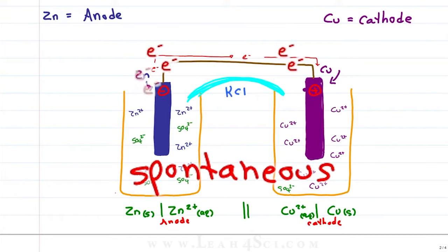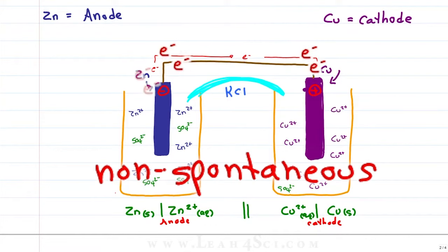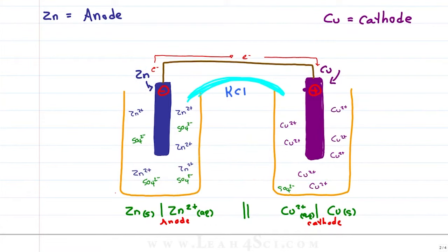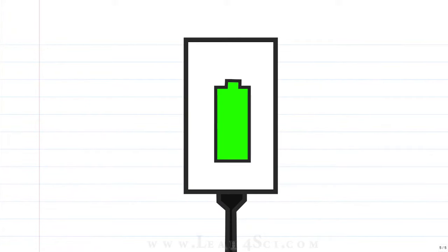If discharging is spontaneous, then charging or forcing the electrons in the opposite direction, the direction they don't want to go, is a non-spontaneous reaction. How do we make the non-spontaneous reaction happen? This is going to require an input of energy like a cell phone charger to force the electrons to move in the opposite direction.